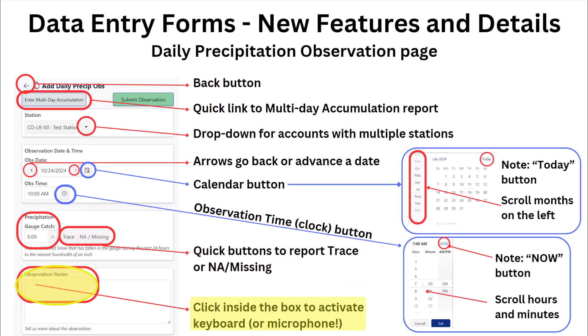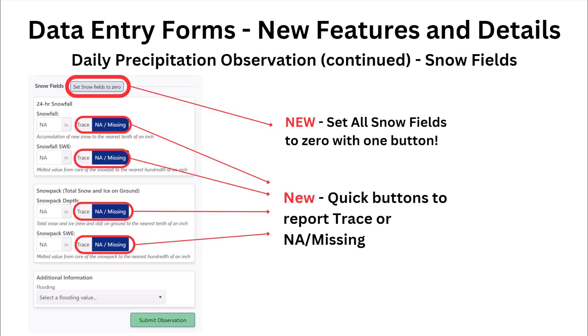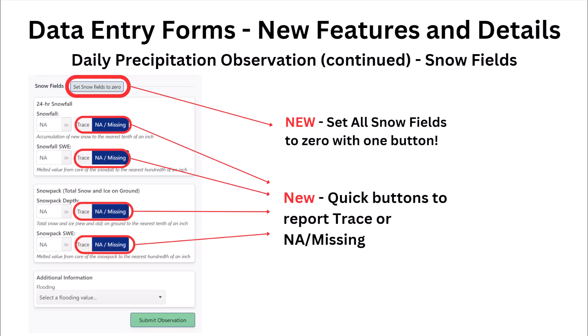Clicking in the observation notes field will open up your keyboard, where you can type or even press your microphone button to speak into your smartphone. For snowfall and snowpack, we now have a set all snow fields to zero button, but please be careful here. If you have any snow on the ground during the winter but did not do a measurement, please make sure to mark the snowpack fields as NA/missing and not zero. We have lots of training materials on how to measure and report snow, so please make sure to review them if you want to participate in snow measurements.